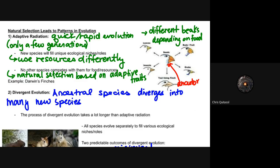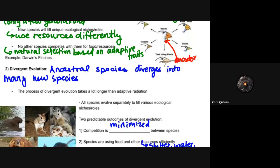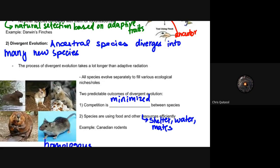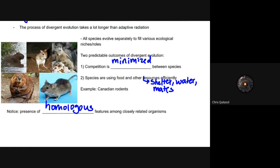The second aspect I want to talk about is what's called divergent evolution. It's that ancestral species diverges into many different species. The process of divergent evolution takes a lot longer than adaptive radiation and the species evolves separately to fill various ecological niches and roles. So two predictable outcomes of divergent evolution is that competition has to be minimized between species is the first point, and then second, species are using food and other resources efficiently. They take care of the resources that they utilize and they utilize efficiency, meaning shelter, water, and mating is all done quite efficiently.